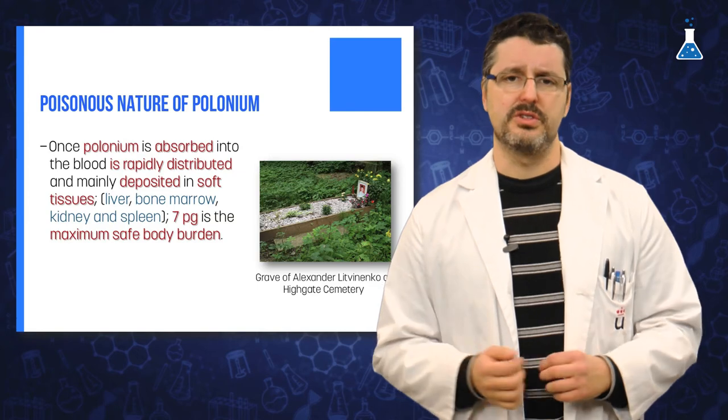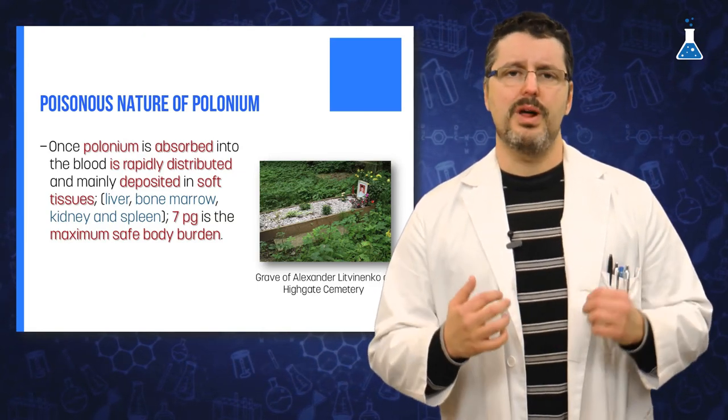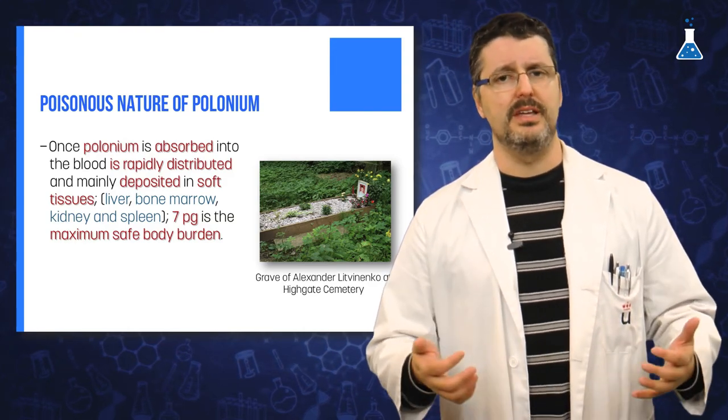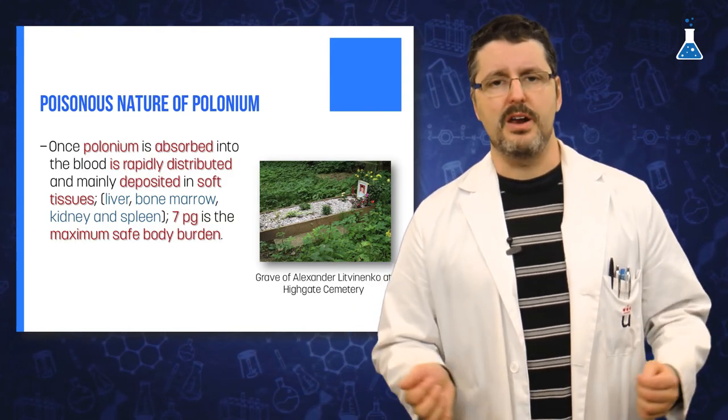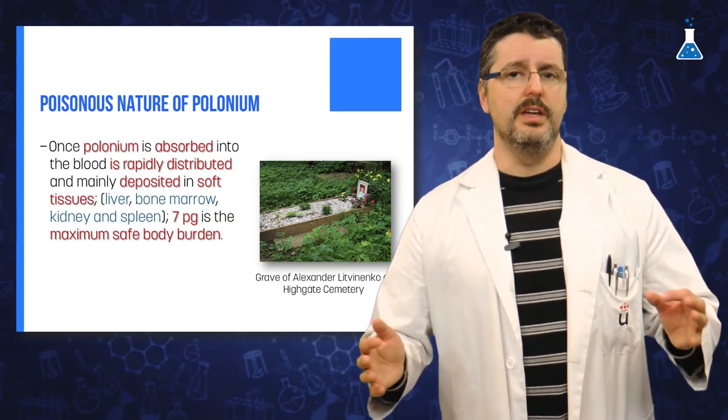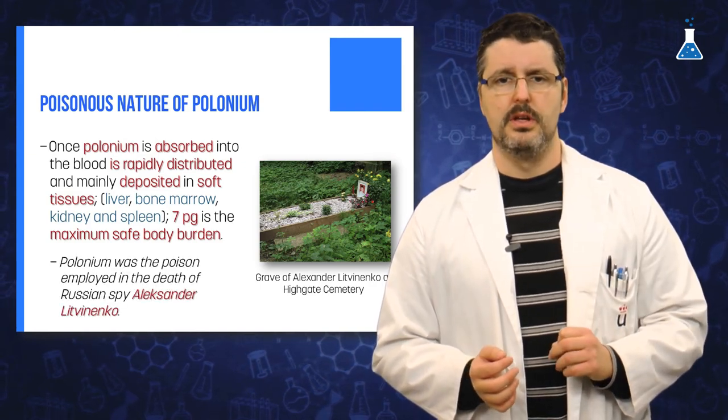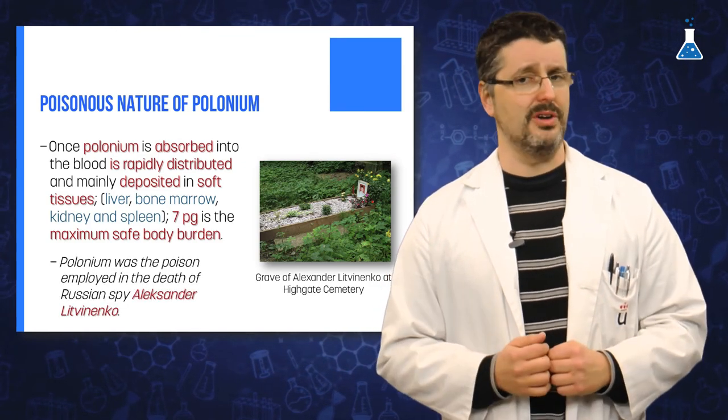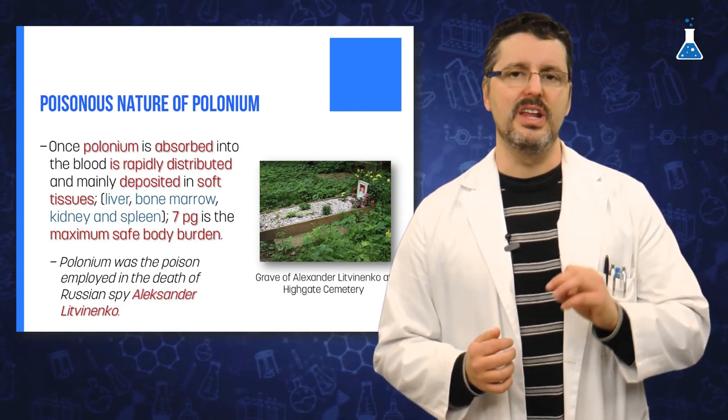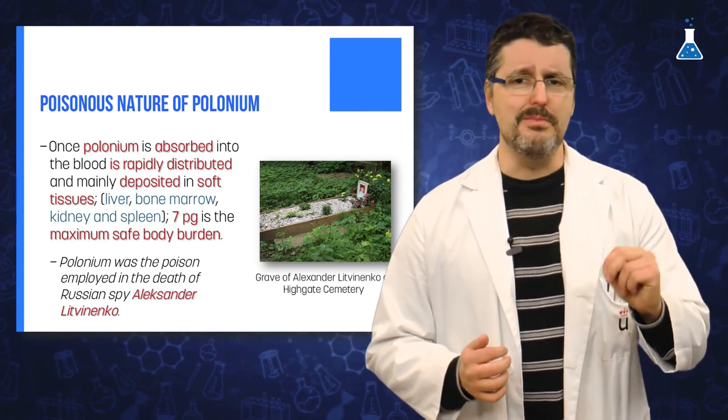Due to its dangerous nature, once Polonium is absorbed into the blood, it is rapidly distributed and mainly deposited in soft tissues, principally in the liver, bone marrow, kidney, and spleen. The maximum safe body burden is only 7 picograms. Polonium was the poison employed in the death of Russian spy Alexander Litvinenko, who apparently received a dose of about 10 micrograms.